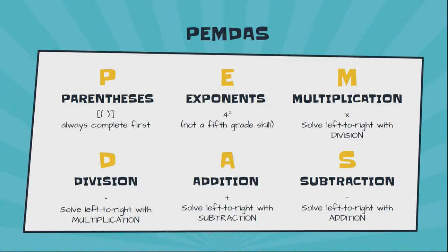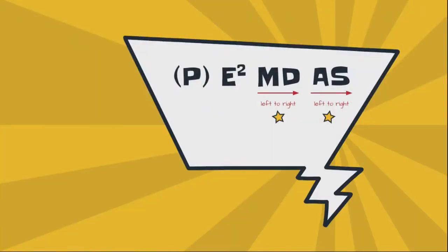D is for division, again left to right with multiplication because they're equal. A for addition. Notice this, addition is also solved left to right with subtraction. And S is for subtraction, solving left to right with addition. This will make more sense, the left to right will make more sense as we get into some examples.